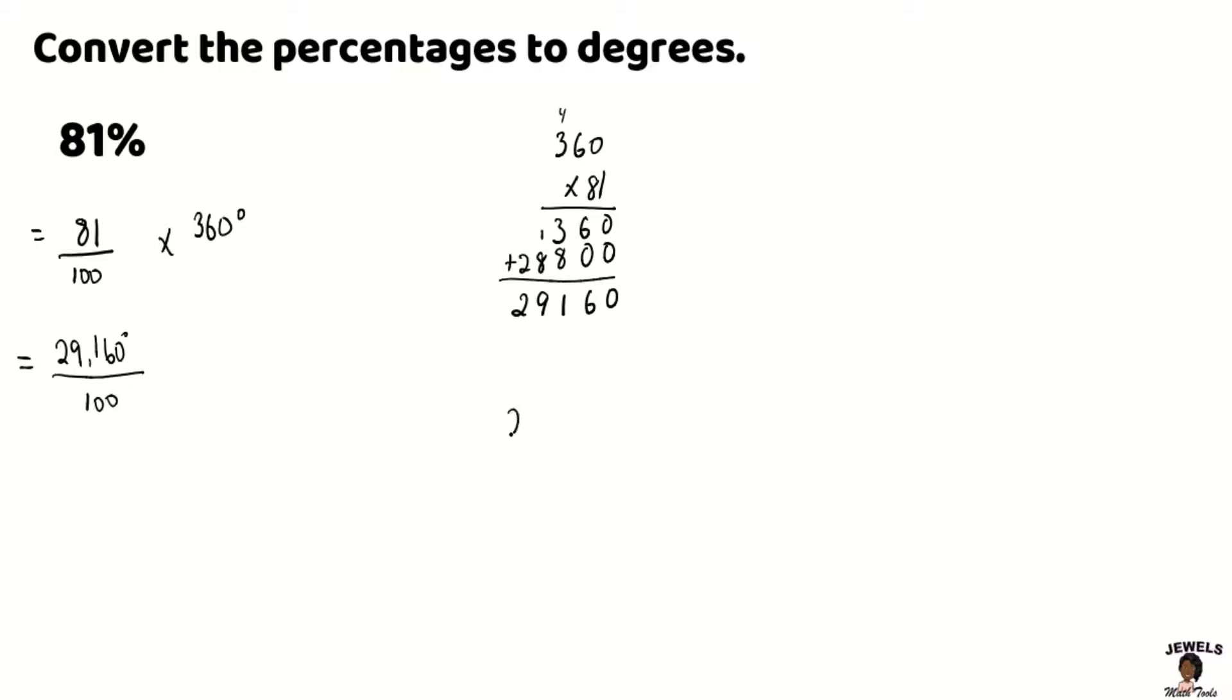And again, we're going to take our number, remembering that your decimal point is always behind the last digit, and we're going to move it two places to the left, which will equal to 291.60 degrees.